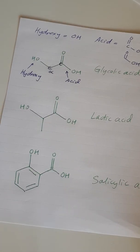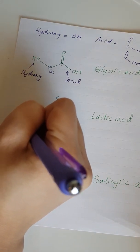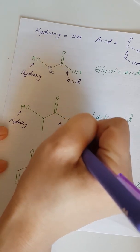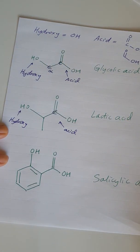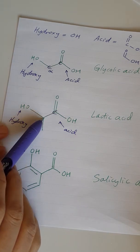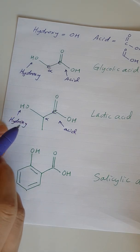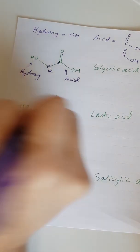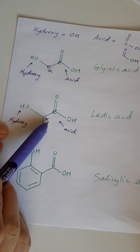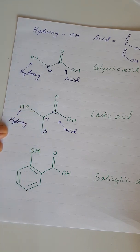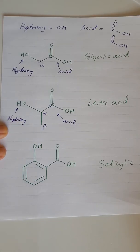Lactic acid is another alpha hydroxy acid. We see the hydroxy on the left and we have the acid here on the right, and so again from this acid carbon we can start counting carbons — the next carbon along is called the alpha carbon. Remember the end of the line is also a carbon, so this would be a beta carbon. Because the hydroxy is connected to the alpha carbon, that's an alpha hydroxy acid. If we moved the hydroxy down here then that would be a beta hydroxy acid.